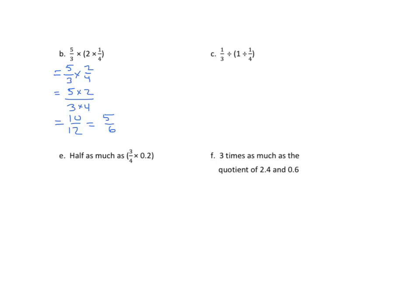Moving along: 1/3 divided by the quotient of 1 divided by 1/4. Going step by step — how many fourths are in 1/3? That's the same as 1 times 4. Then I have 1/3 divided by 4. To divide, I convert: 1/3 becomes 4/12 divided by 4, which equals 1/12.